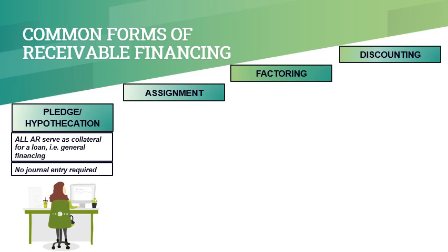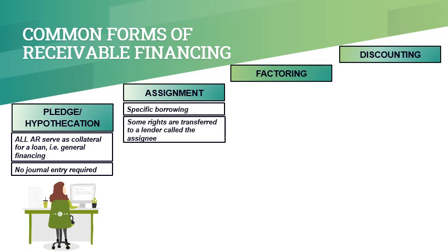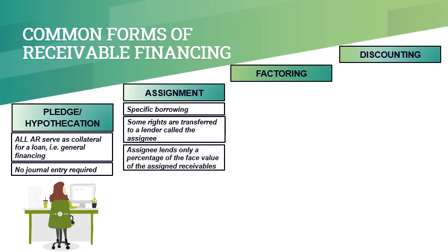Assignment differs from pledge as assignment involves a specific accounts receivable. In assignment, the assigner transfers some of its rights and some of its accounts receivable to the assignee. The assigner, however, still retains ownership of the accounts receivable assigned. Thus, the assigner still carries the accounts receivable assigned in its books. The assignee normally lends the assigner only a certain percentage of the accounts receivable assigned.